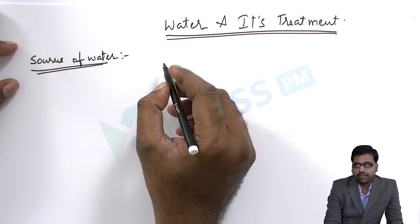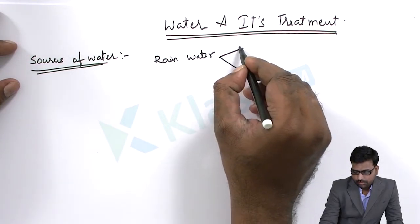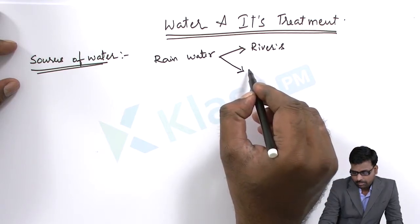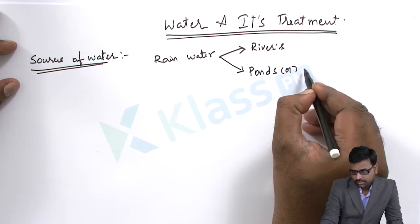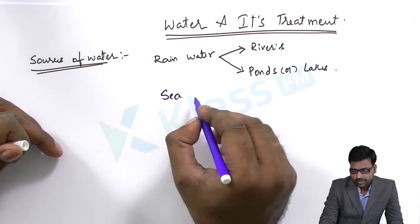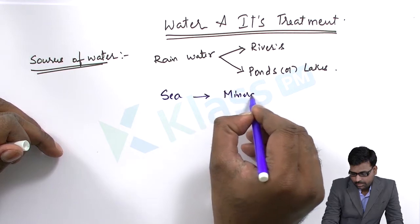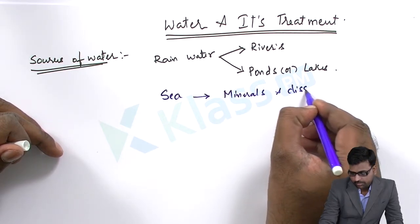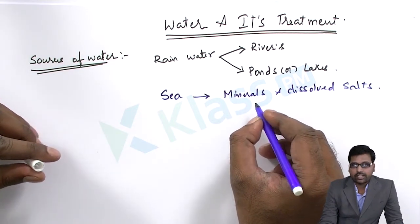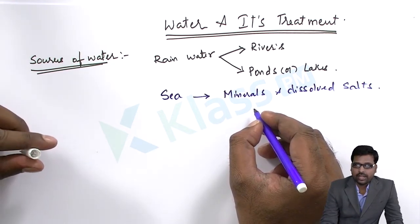Sources of water are mainly divided into rainwater, which in turn goes to rivers, ponds, or lakes. The next main source of water is the sea. Seawater has many minerals and dissolved salts which cannot be used for agriculture purposes, but can be treated and used for household as well as industrial purposes.